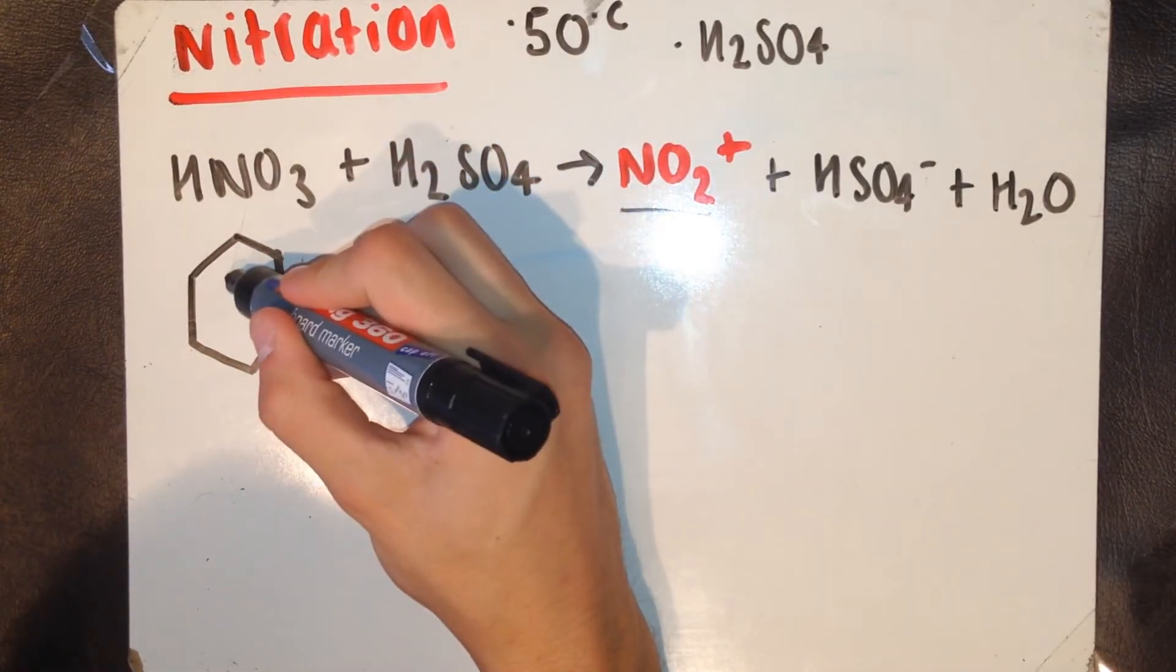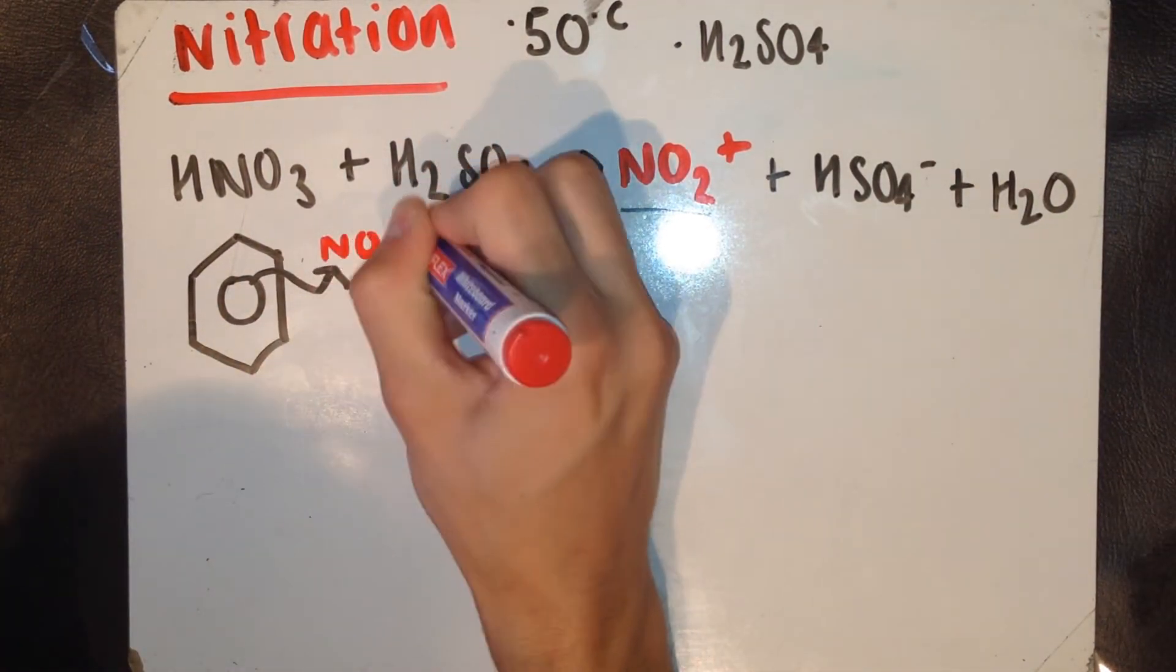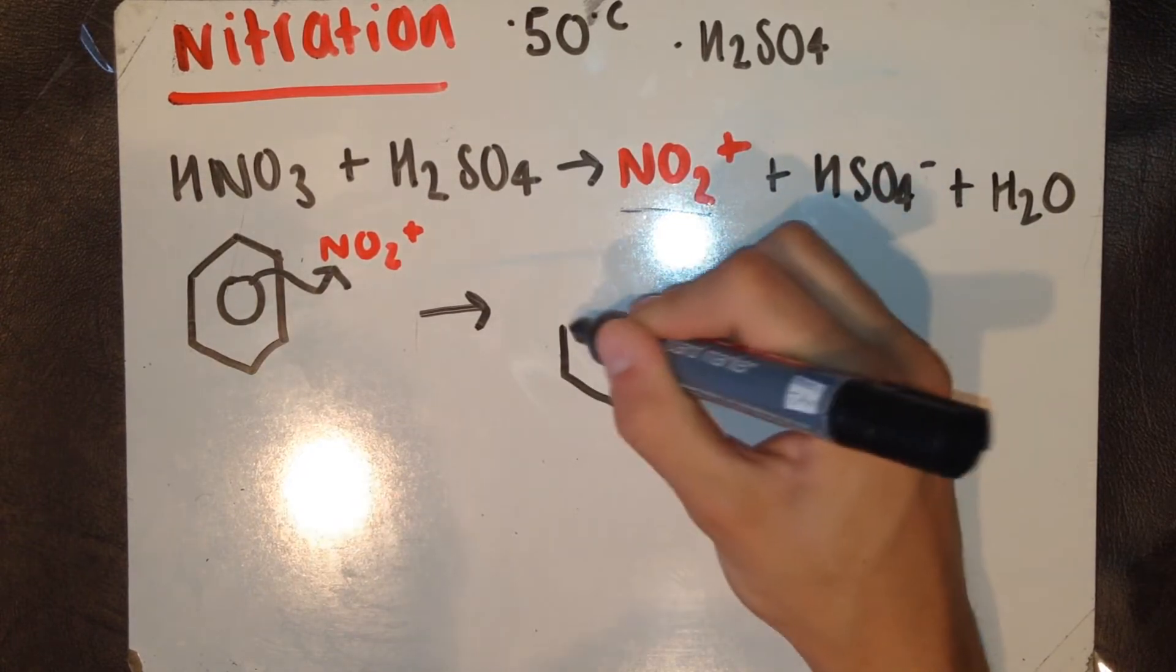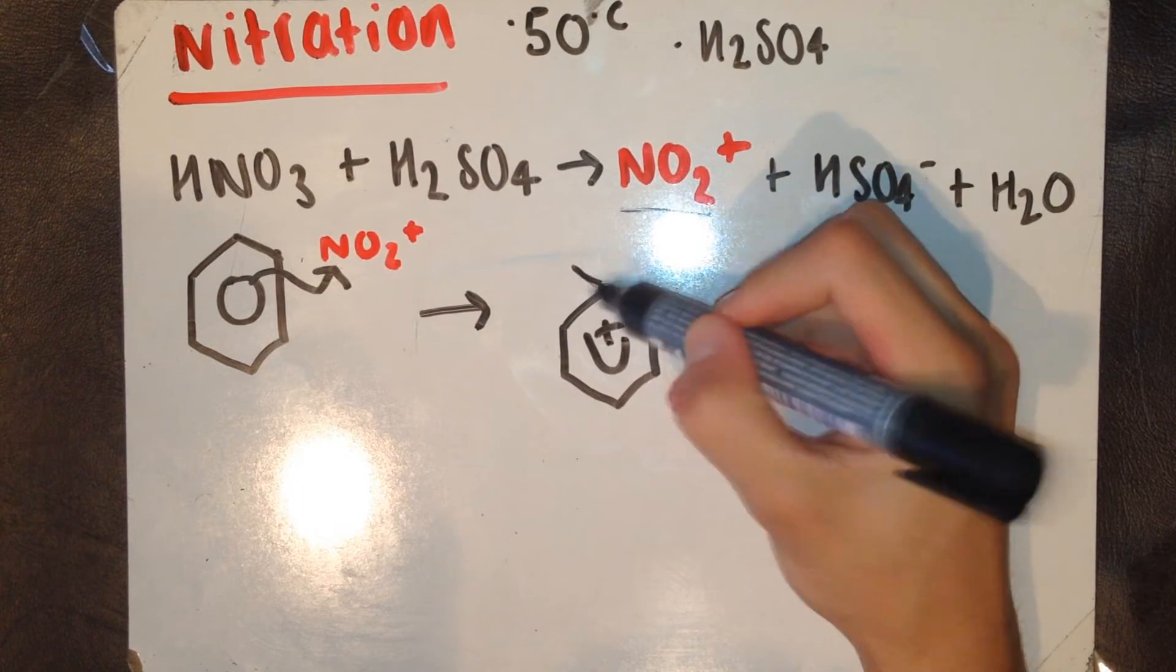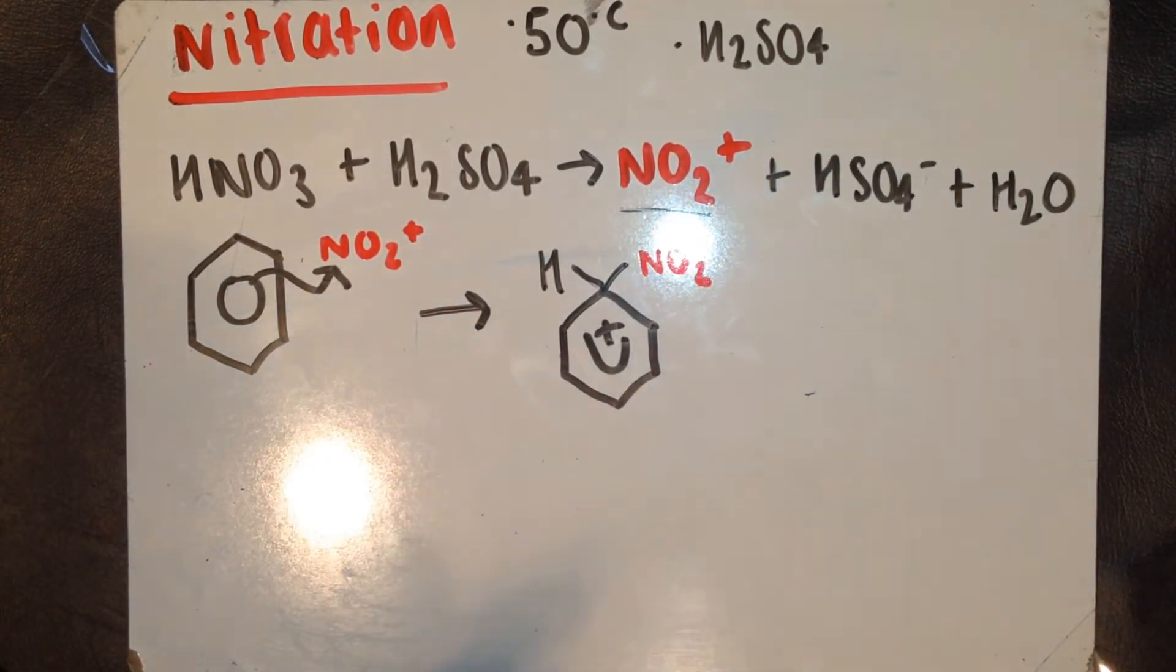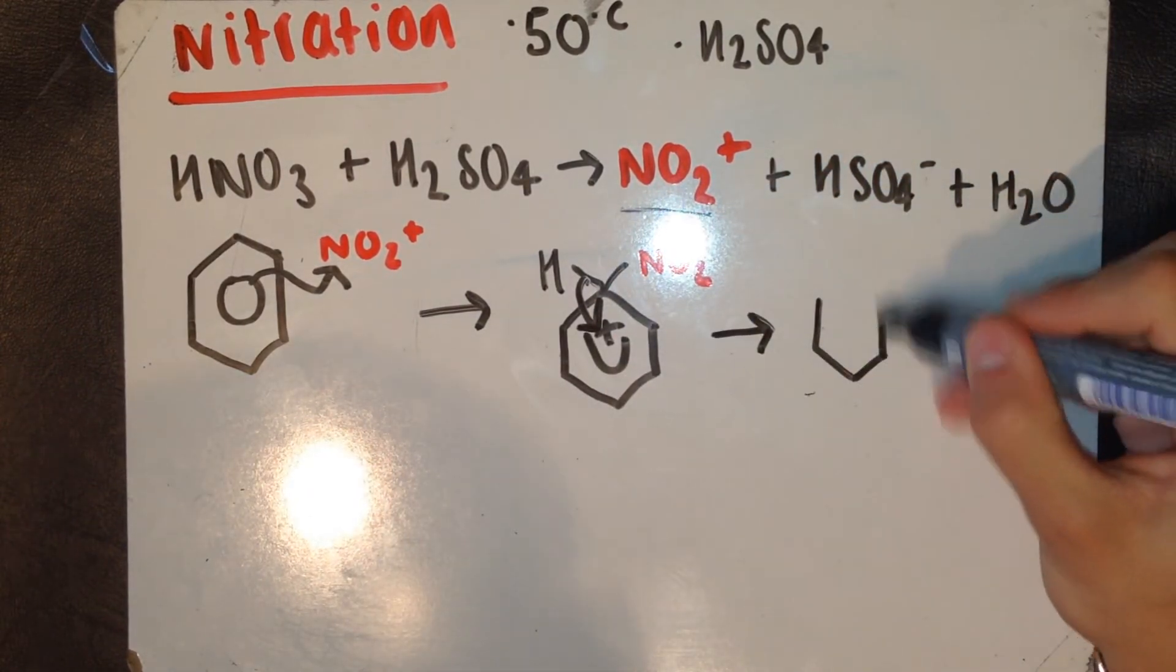So, remember the electrophile, in this case NO2+, accepts a pair of electrons from the delocalised ring. Remember the intermediate forms. This contains both the hydrogen atom and the NO2 electrophile. The C-to-H bond breaks, and the electrons return to the delocalised ring. The final products then form.